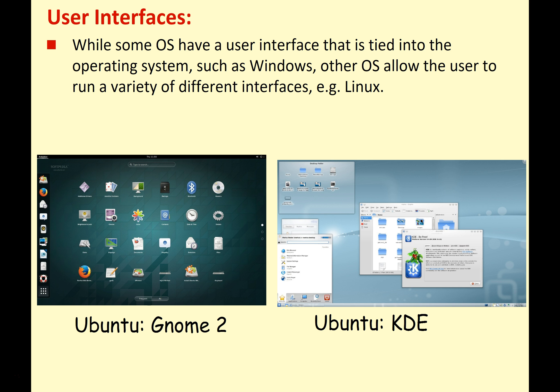A little note before we continue: while with some operating systems the user interface is very much tied to the operating system — as in something like Windows where you're always going to get the same look and feel — because the user interface is separate from the kernel, some operating systems allow you to run a variety of user interfaces on top of the kernel. So for example, Linux — one of the operating systems we looked at before — you can have a wide variety of user interfaces.